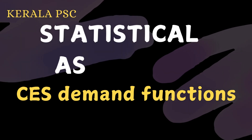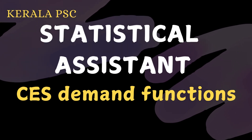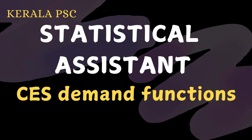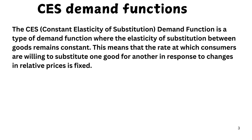Hi everyone. Now we will discuss the Statistical Assistant Example Economics part of CES Demand Functions. CES Demand Functions are Constant Elasticity of Substitution Demand Functions. It is a type of demand function where the elasticity of substitution between goods remains constant. This means that the rate at which consumers are willing to substitute one good for another in response to changes in relative prices is fixed.